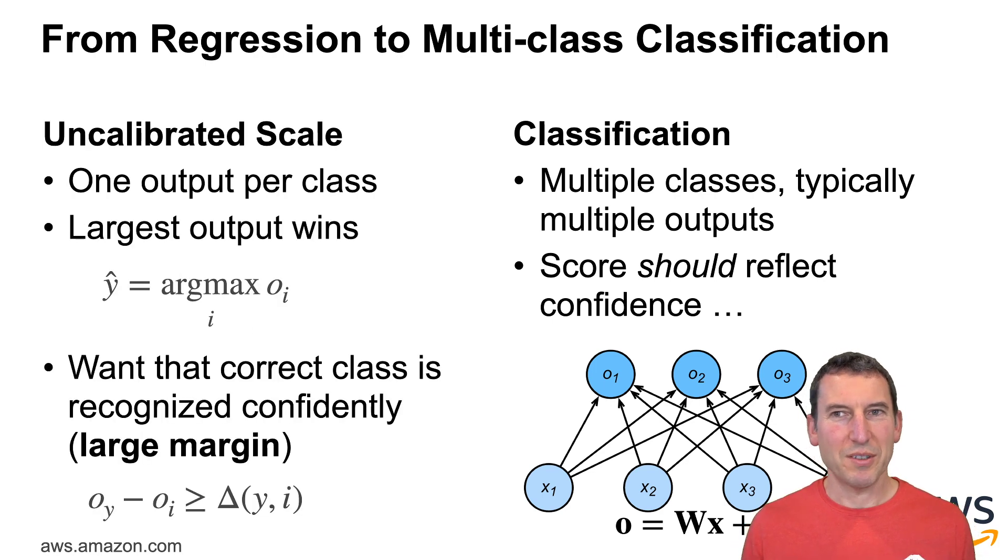What I could do is I could just use something like an uncalibrated scale, so I have one output per class which is okay if my number of classes isn't too large. Then just the largest output wins. In other words, I just take the argmax over all the outputs and what I probably want to do is make sure that for the correct class I'm very confident in recognizing it such that the output for the correct class is much larger than the one for the incorrect class. By the way, the output function is simply output is w times x plus b where w now is no longer a vector but it's a matrix. Don't worry because CPUs and in particular GPUs really like matrices, this is very fast.